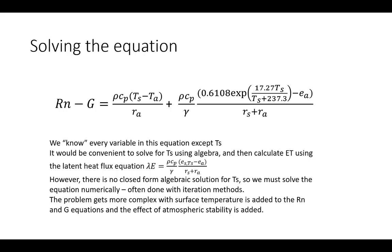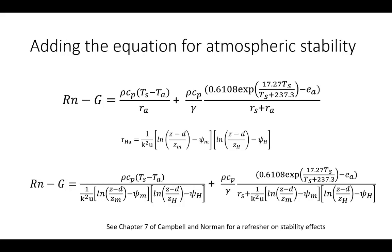The problem gets more complicated when adding other terms. For example, we can add the impact of atmospheric stability, which involves a fairly complicated approach to computing aerodynamic resistance RA. RA is a function of wind speed, von Karman's constant, roughness length, displacement height, and atmospheric stability corrections — those terms in the square brackets — requiring the Monin-Obukhov length, which is itself a function of sensible heat flux H and therefore surface temperature.